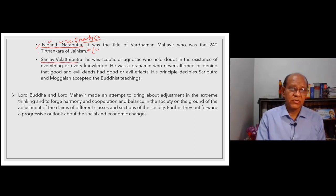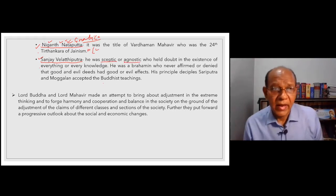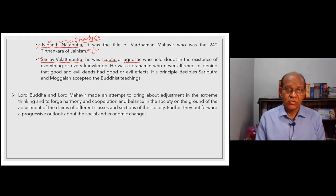Sanjay Velatiputta was another great philosopher of these six. He was a skeptic or agnostic. It means he held doubt in the existence of everything. He claimed that there is no absolute knowledge. According to Sanjay, there was no absolute knowledge. Knowledge is relative and based on so many parameters.